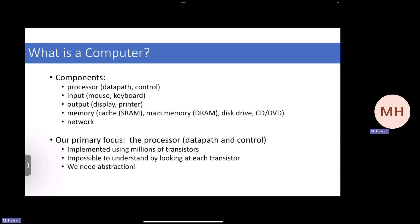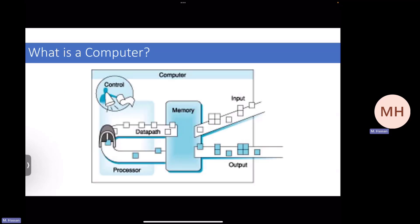Our primary focus will be mainly on the processor — not just the data path and control, but also the topics we mentioned we're going to cover, including caches, pipelining, multi-cores, et cetera. A very simplistic view of a processor or a computer in general is: you have a factory that simply takes some inputs, stores them in memory to operate on them, executes some instructions that do some processing, and then gives you the output.